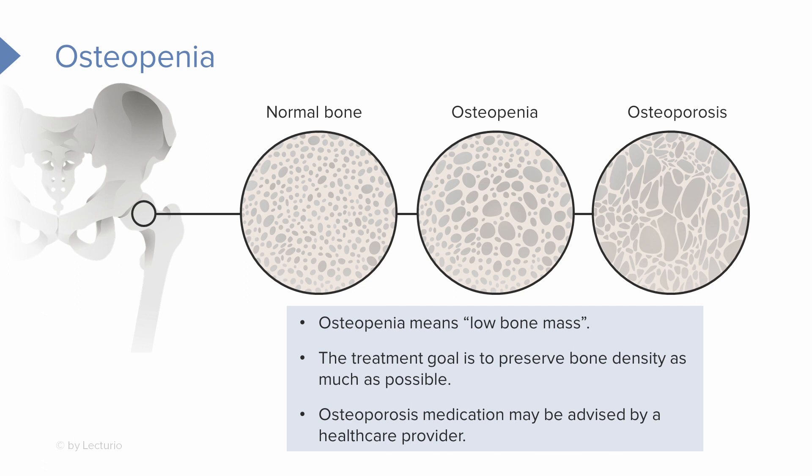So when you recognize someone has risk factors for osteoporosis and their DEXA scan shows that they're in osteopenia, this is a client that we need to closely monitor and make the appropriate recommendations for their healthcare treatment.